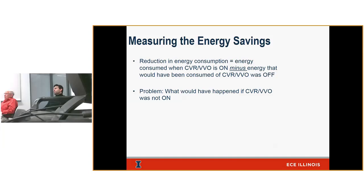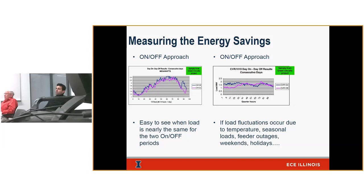Here's an example of an actual circuit over a number of hours where we had CVR on — shown in pink — and CVR off in dark blue. You can see the variation looked reasonable and the power was reduced overall. A good candidate circuit gives neat results. Another circuit could have weird results, especially with outages, large temperature fluctuations, seasonal loads, or missing data. The idea is to do on-off testing while normalizing for these fluctuations.